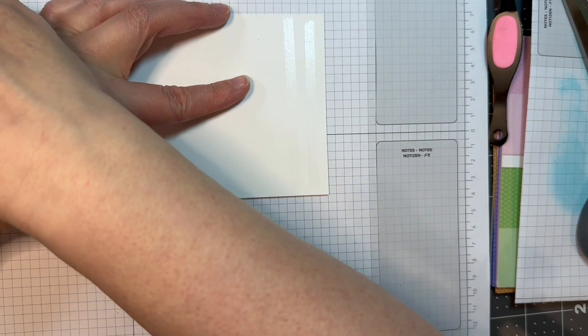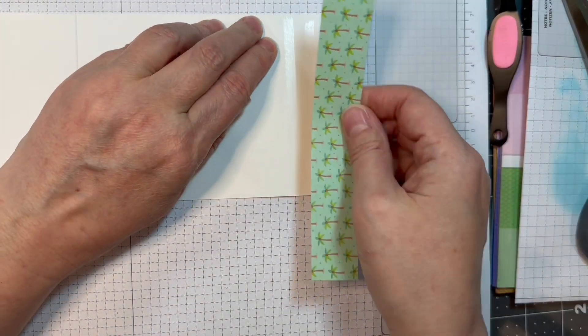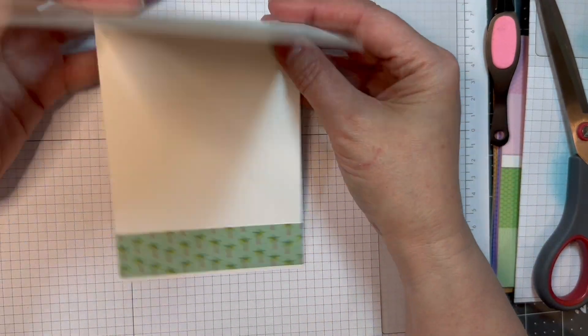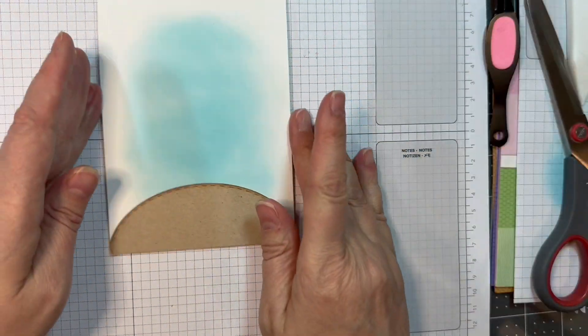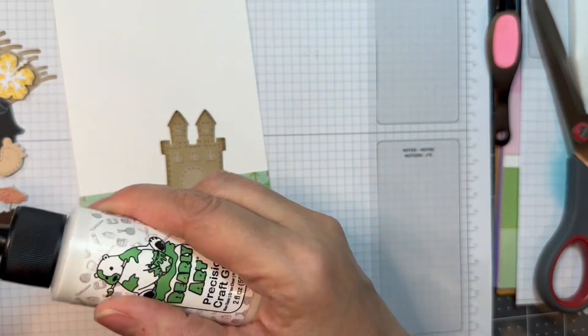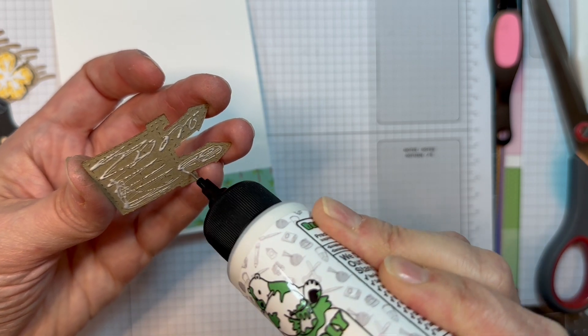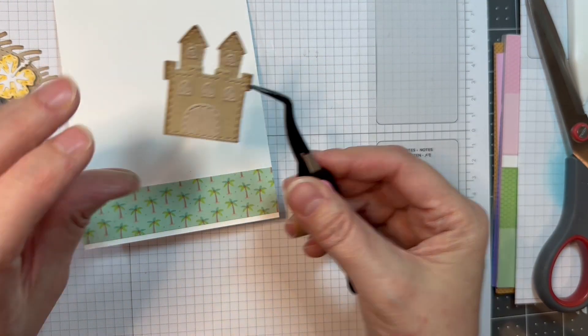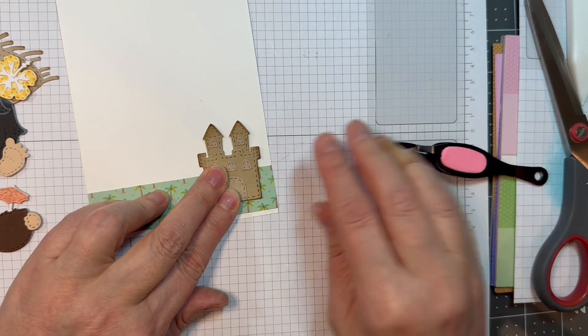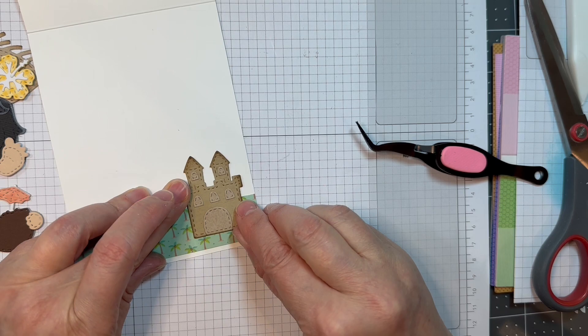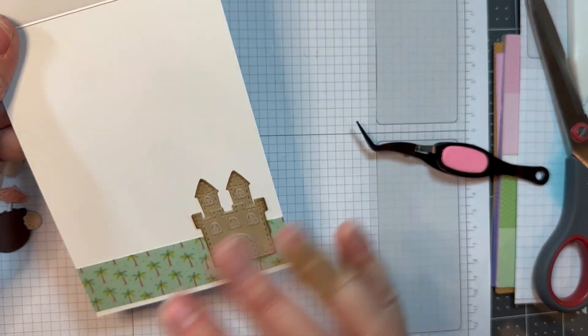Now I am adding a one inch strip from that Seaside Summer to the inside of this little card base, and I'm trimming off the overhang with a pair of scissors. I'm reinforcing my fold. Now I'm going to add this cute little sandcastle to the inside of my card from that beach add-ons assembly video. I like to add something on the inside of the card. I just think it adds something.